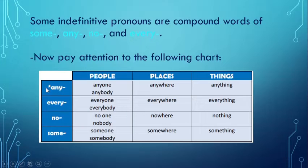Here we have any, every, no, and some. We use any to talk about people. We can say anyone or anybody. To talk about places, anywhere. And to talk about things, anything.